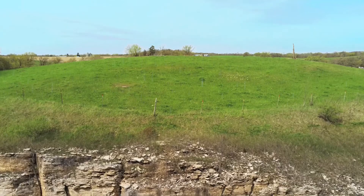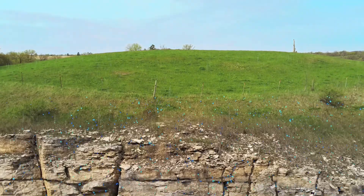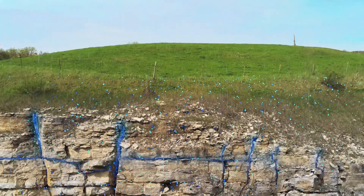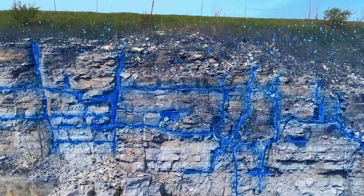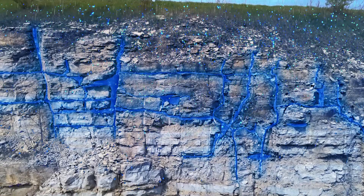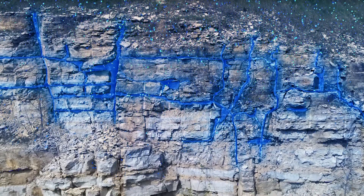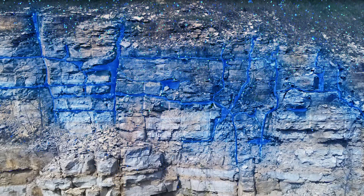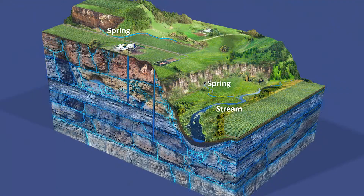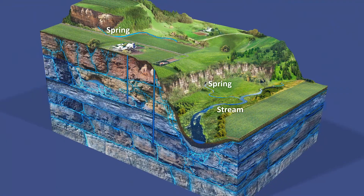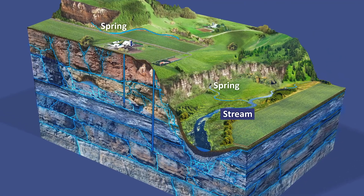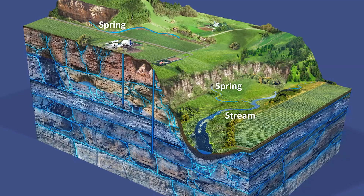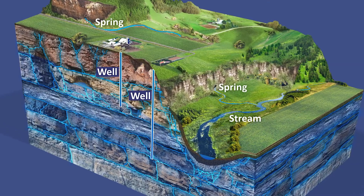All groundwater was once rain or snow. Rain and melted snow soaks into the ground, moves through the soil and the rock beneath our feet, and eventually, over days, weeks, or years, may flow naturally to a spring or stream, or be pumped from a well for drinking water.